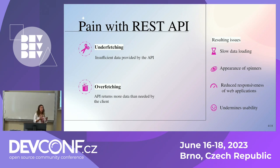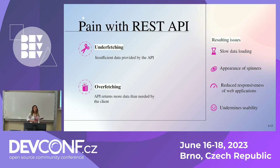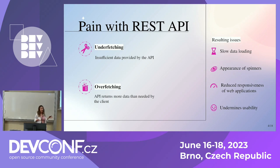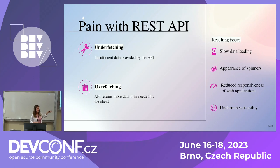Before I start talking about GraphQL, I'm going to go over REST API real quick. We all know about REST API — it's the go-to solution when dealing with data fetching and data manipulation. But with REST API we can have some problems. One of them is under-fetching, which is when requesting data requires more than one REST API request because you're not getting enough from a single request. We also have over-fetching, which is the opposite — getting more data than you actually need. All of this can result in slow loading data, the appearance of spinners, and it undermines the responsiveness and overall usability of the web application.